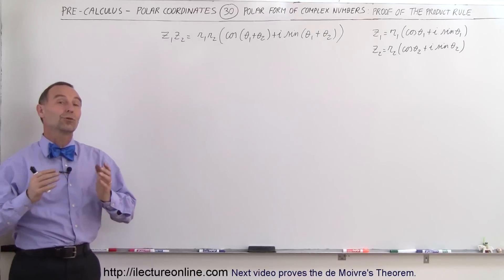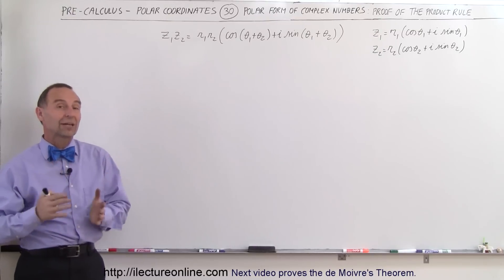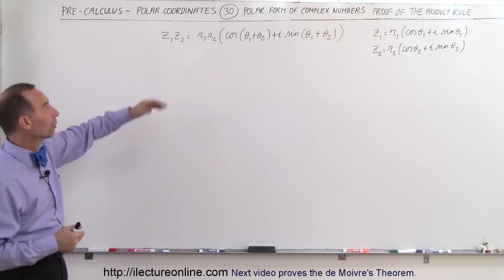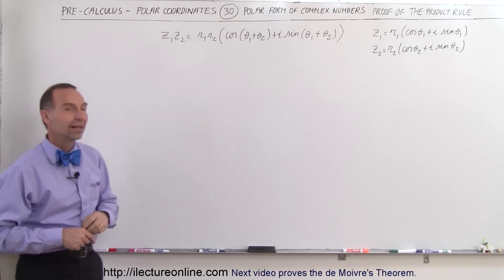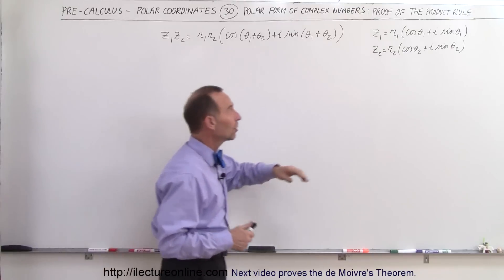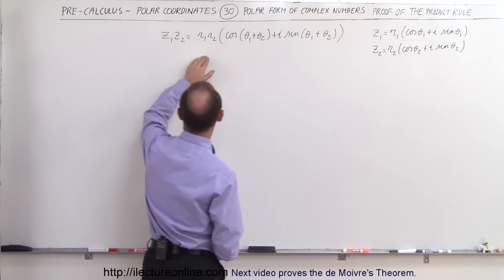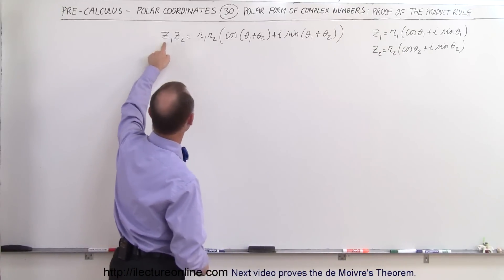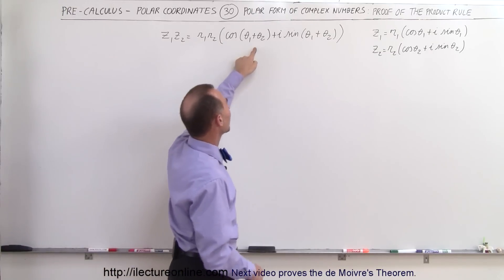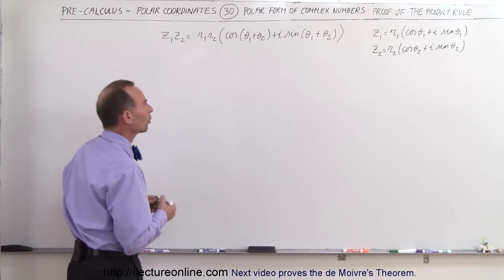Welcome to our lecture online. For those who are interested in finding out why we can use the rule that the product of two complex numbers in polar form can be calculated as r1·r2·[cos(θ1+θ2) + i·sin(θ1+θ2)], let's go ahead and prove that.